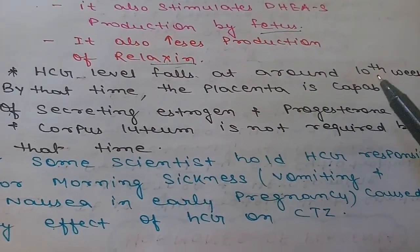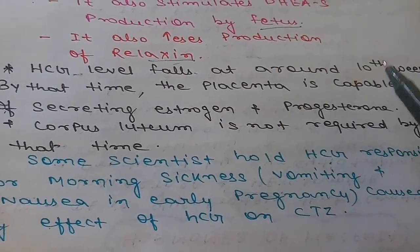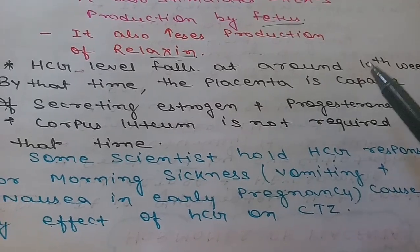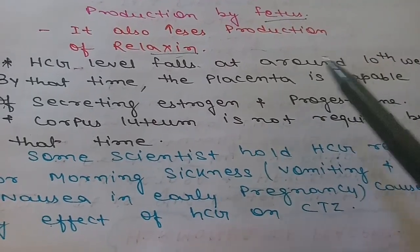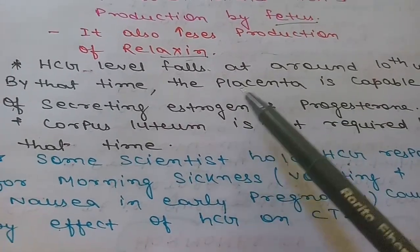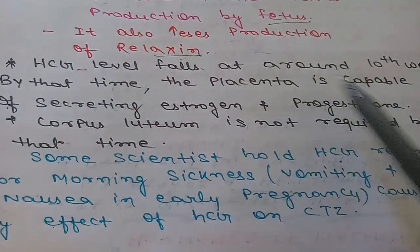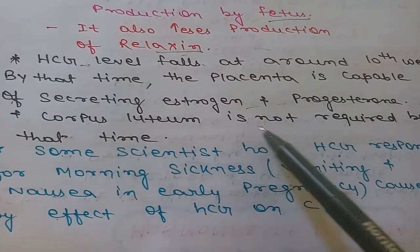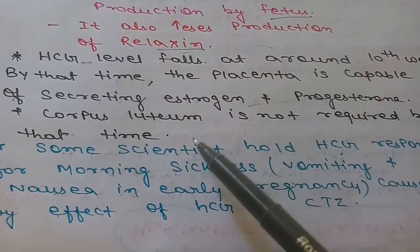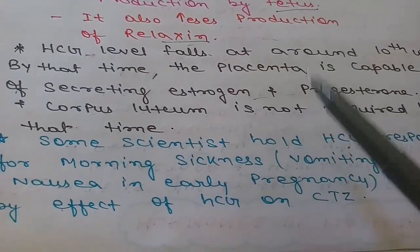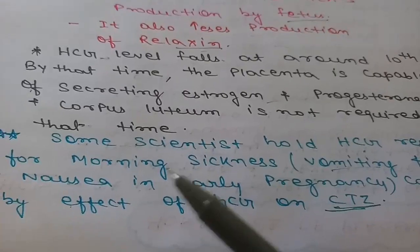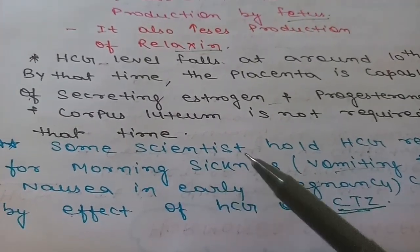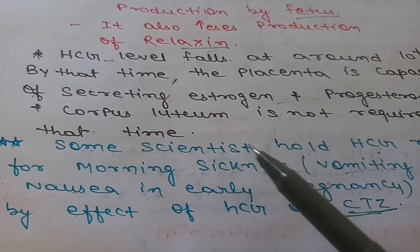Some important points about HCG: HCG levels fall at around the 10th week because by that time the placenta is formed and there is no longer a requirement for the corpus luteum. By the 10th week, the placenta is capable of secreting estrogen and progesterone, so the corpus luteum is no longer required.